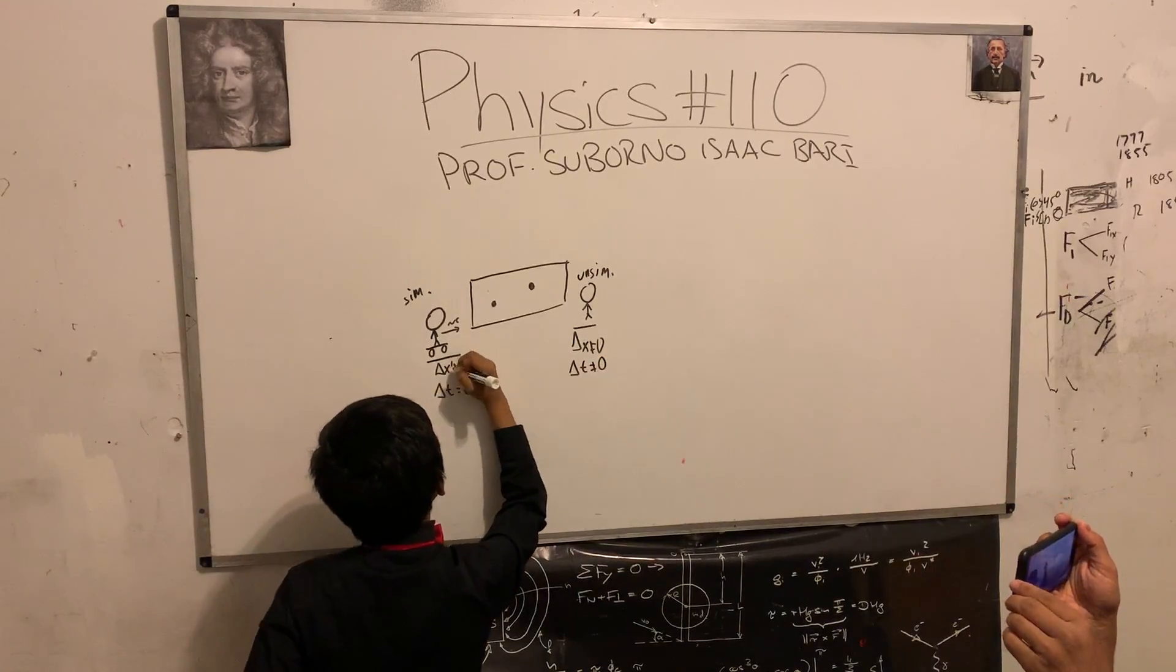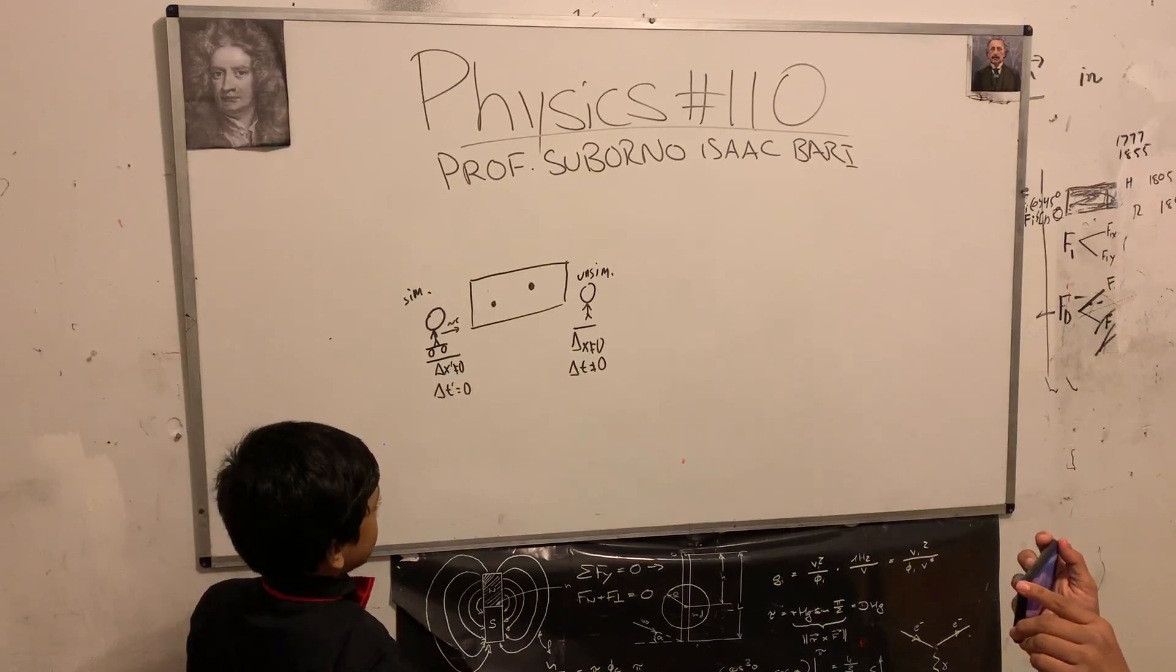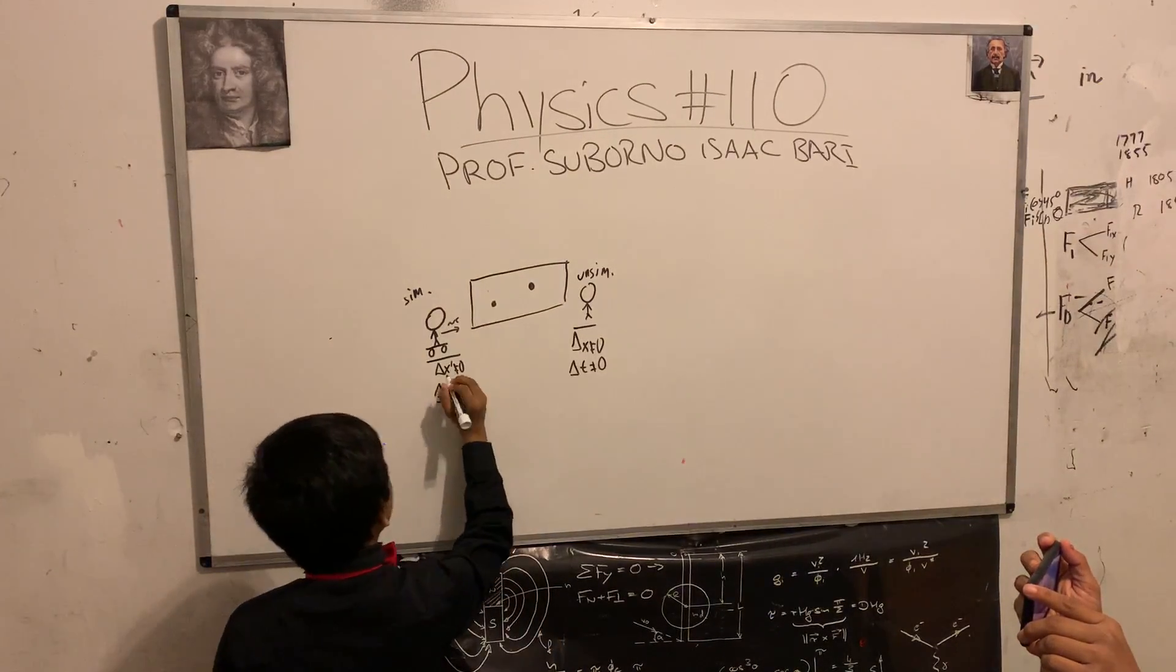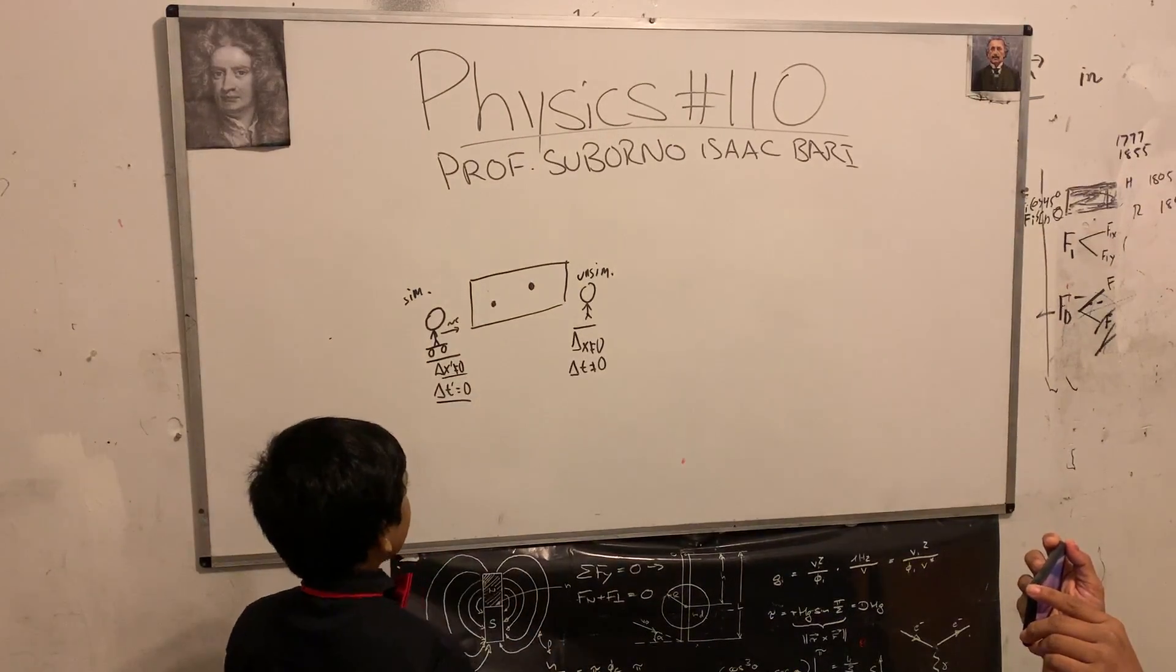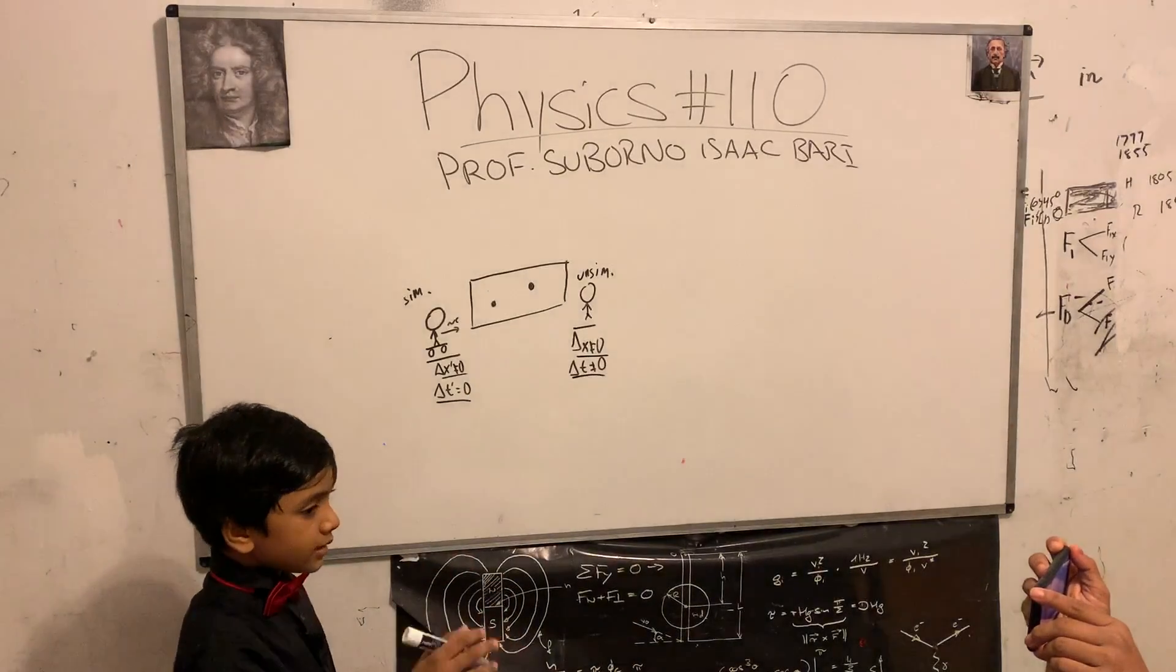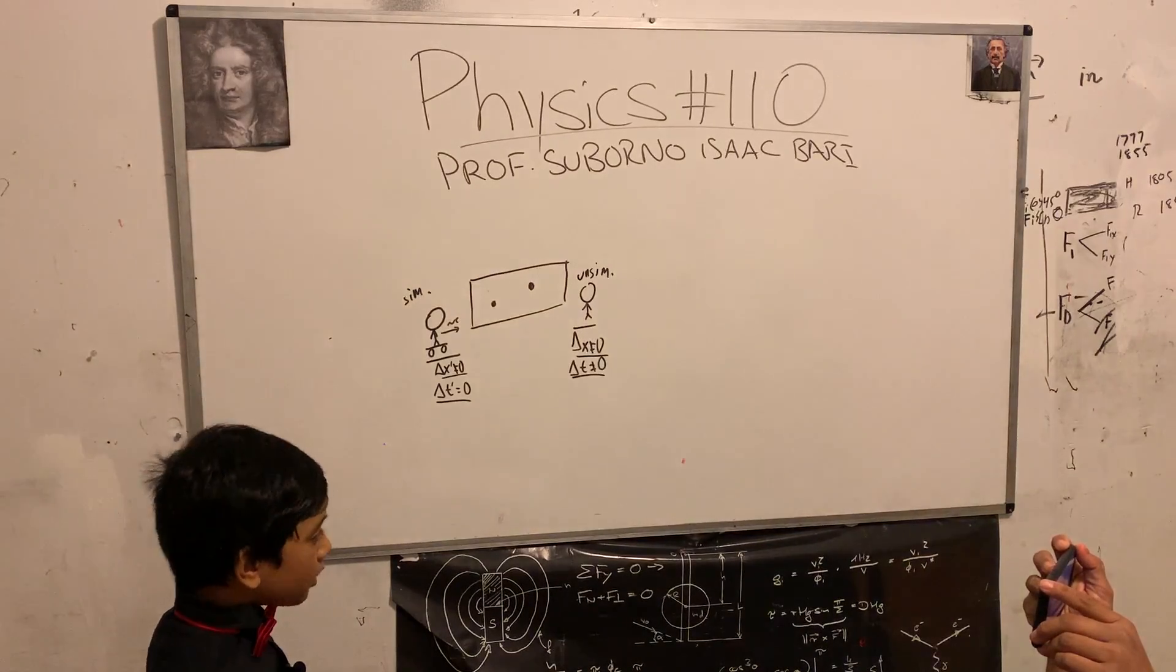Now let's call the one moving prime and the one not moving just the x. So the primed observer observed these observations and the unprimed observer observes these.